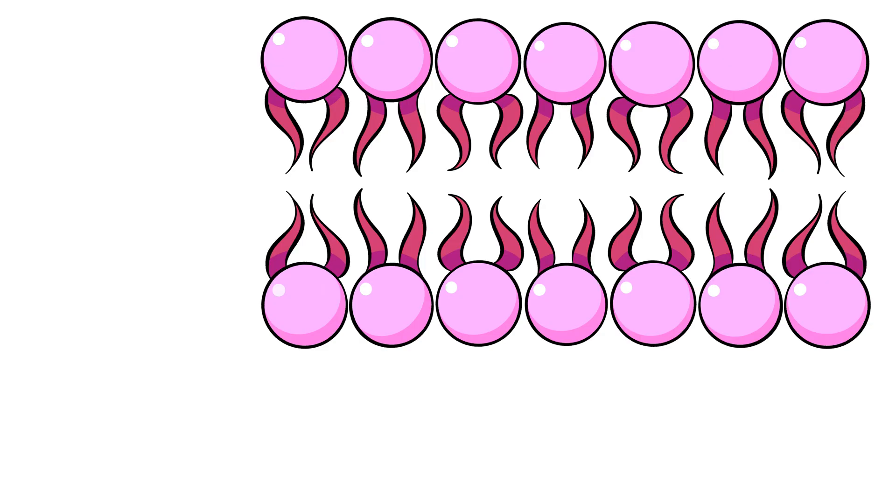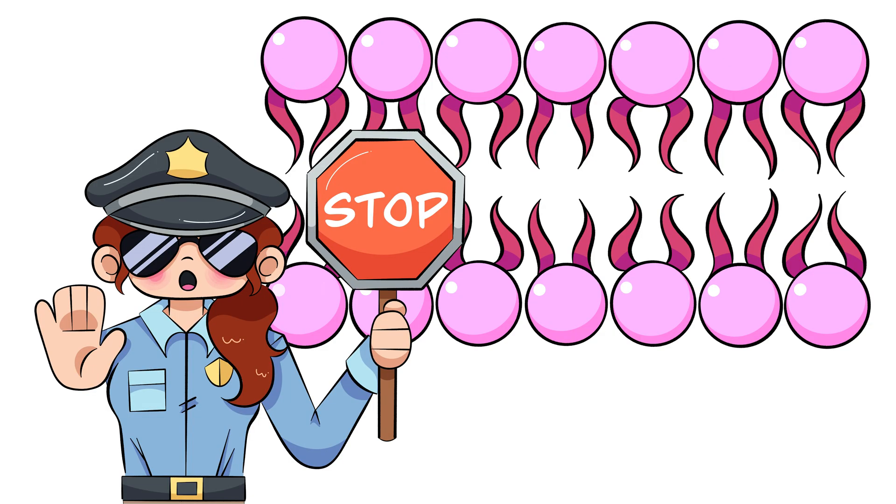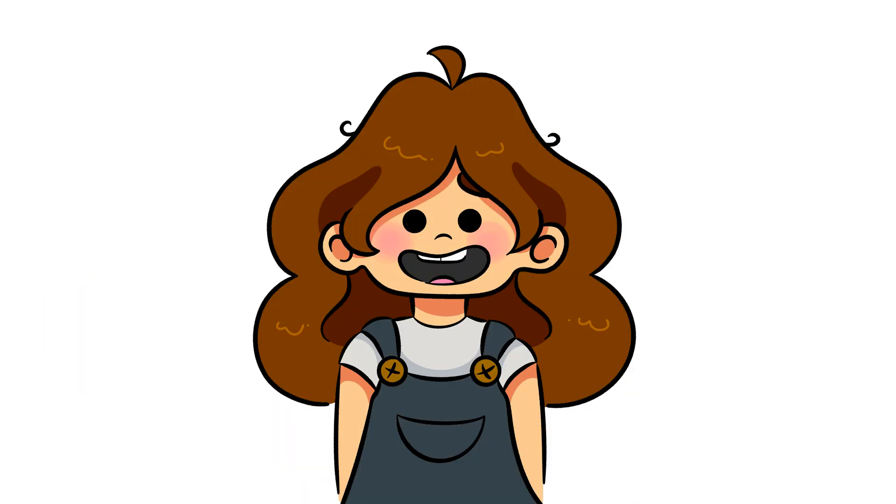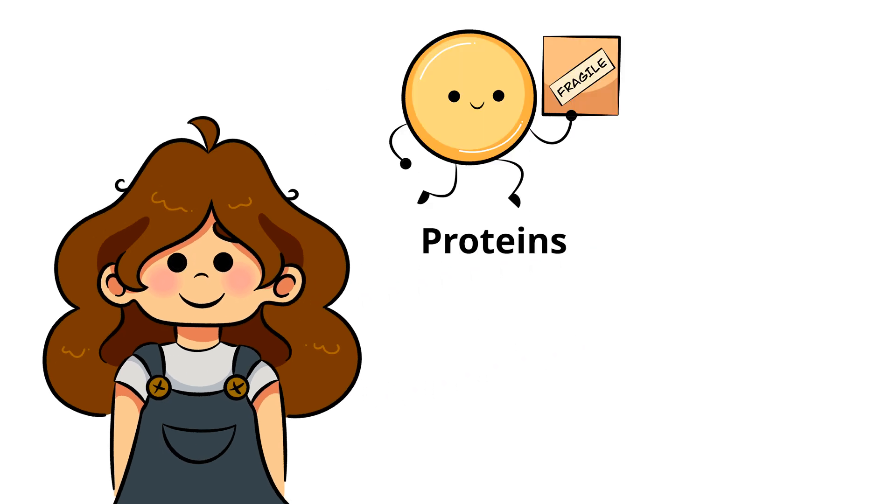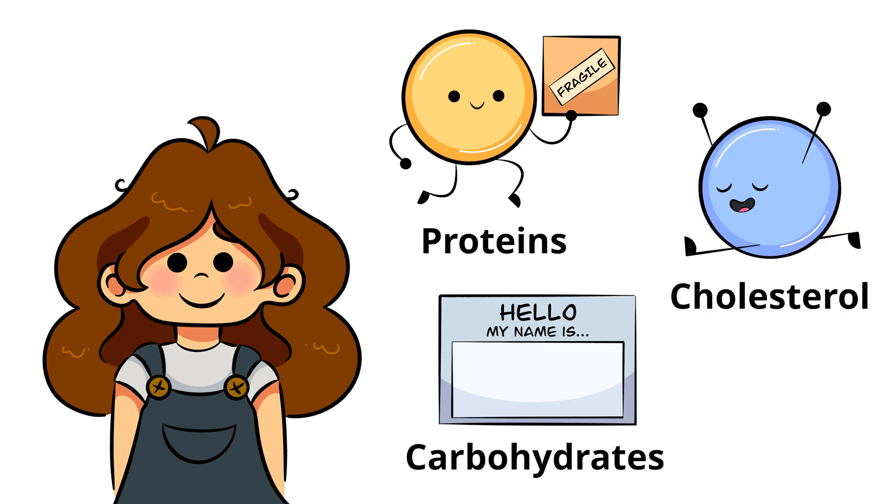Well, the membrane works like its own miniature security system, keeping unwanted liquids out. But wait, there's more to the cell membrane than just lipids. The cell membrane also contains proteins that transport materials in and out of the cell, cholesterol that maintains membrane flexibility, and carbohydrates that help cells recognize each other, kind of like name tags at a big party.